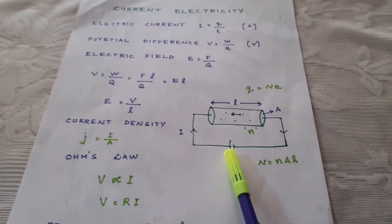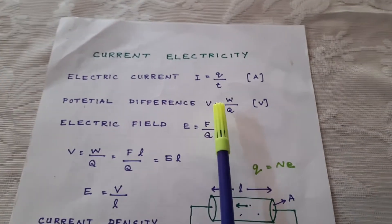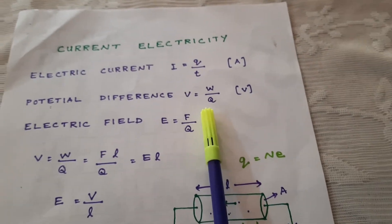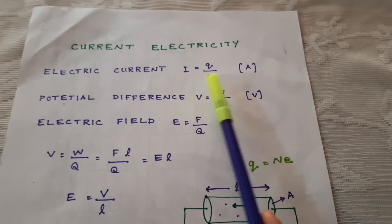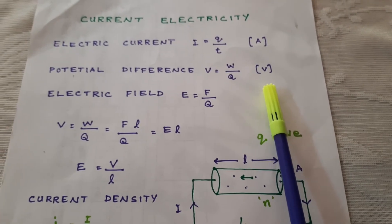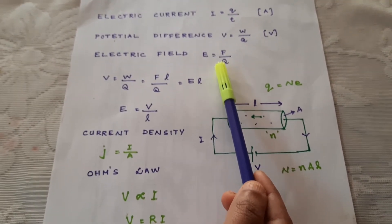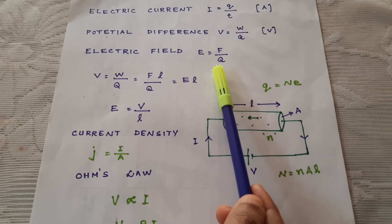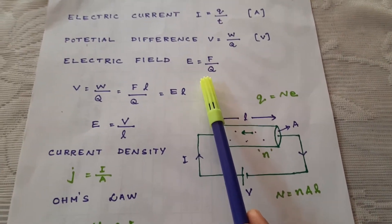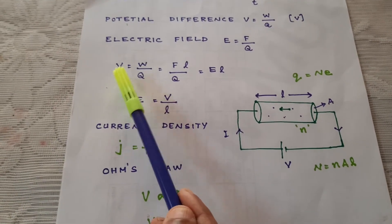The potential difference is defined as the work done to move unit charge from one end of the conductor to the other end. Unit of electric current is ampere and that of potential difference is volt. As the electrons experience a force, this force per unit charge is known as electric field: E is equal to F by Q. The potential difference V is equal to W by Q.